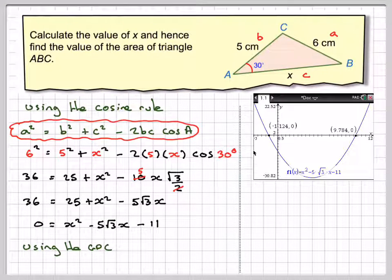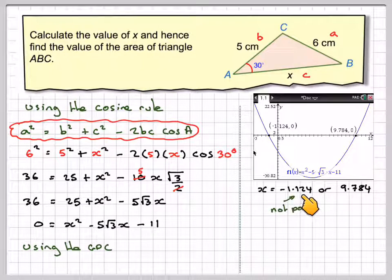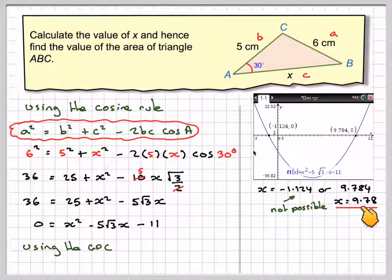So technically speaking, you should draw that graph into your book. So x is equal to minus 1.24, which is not possible, or 9.784. So that gives me 9.78 centimetres.